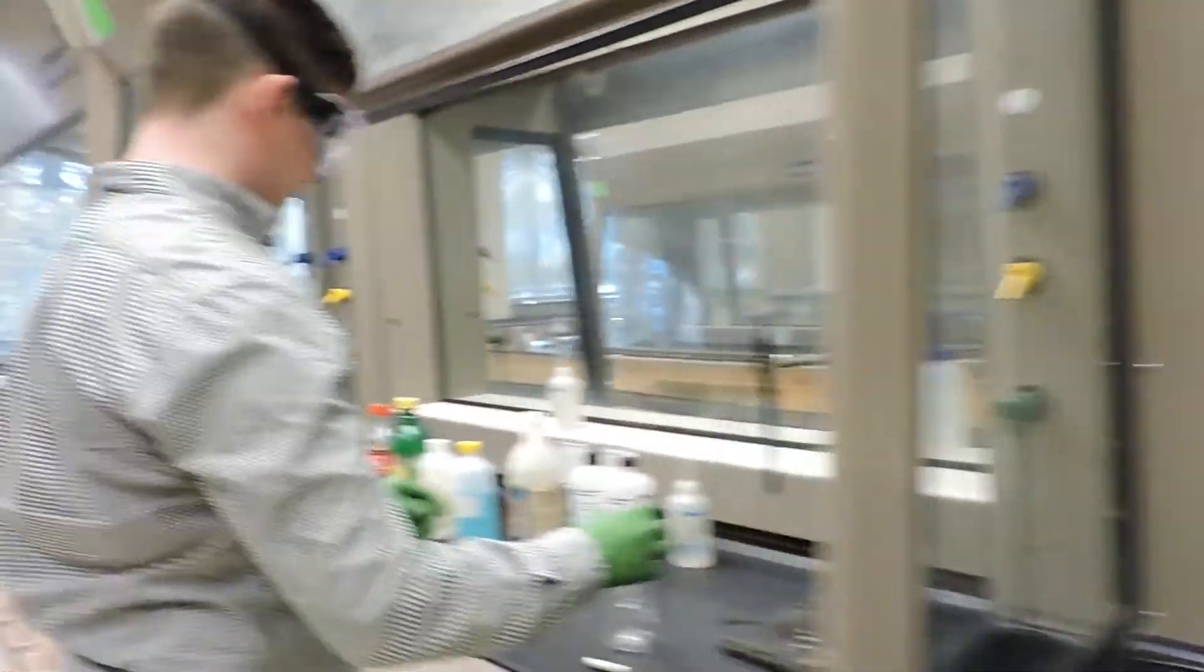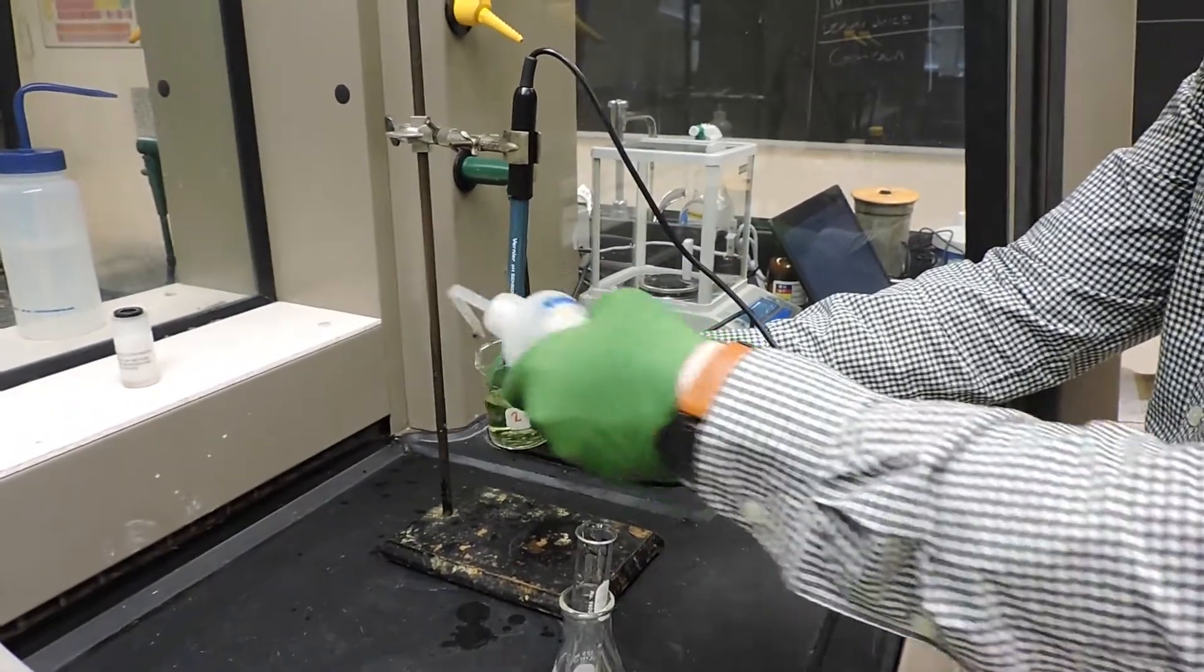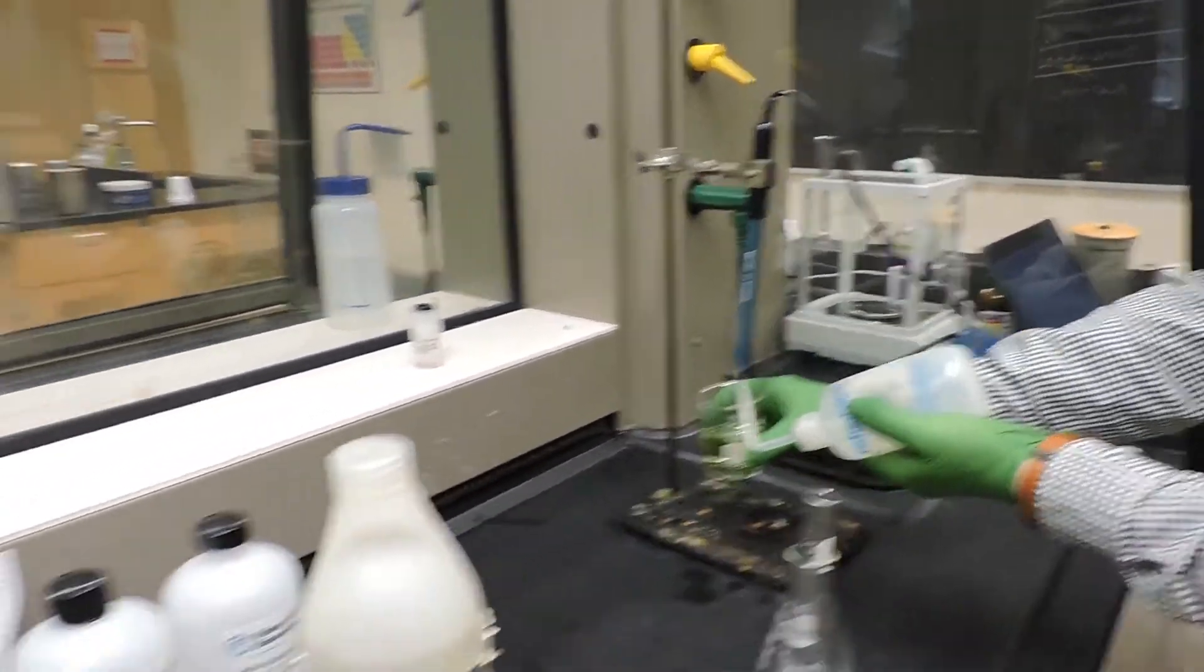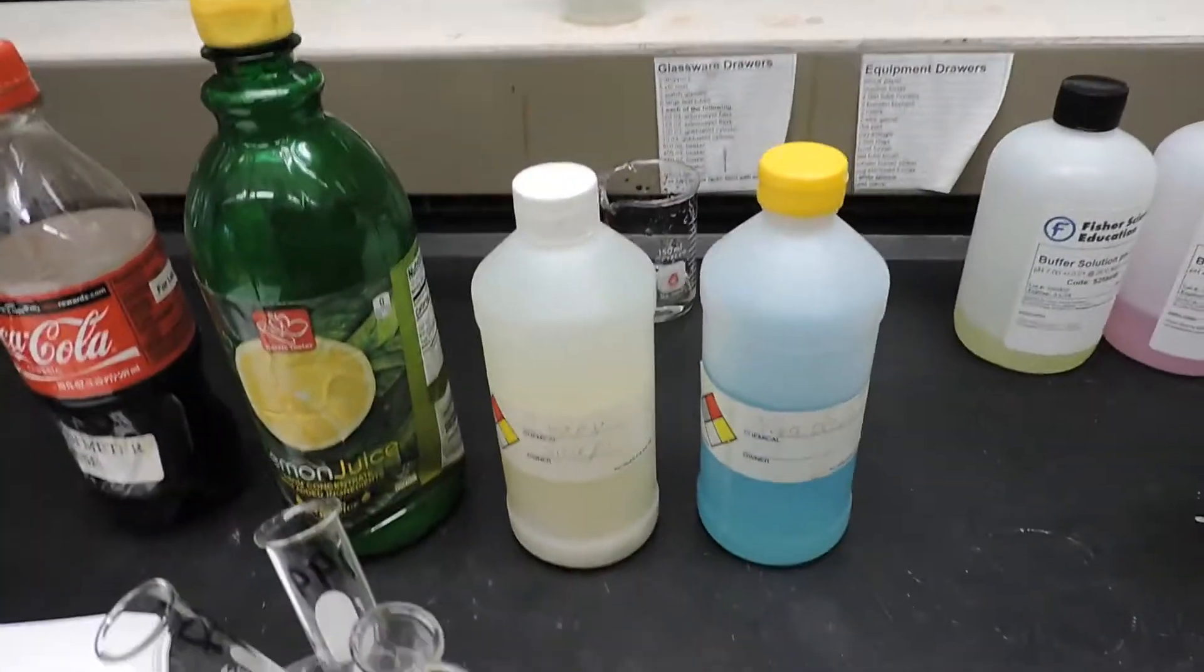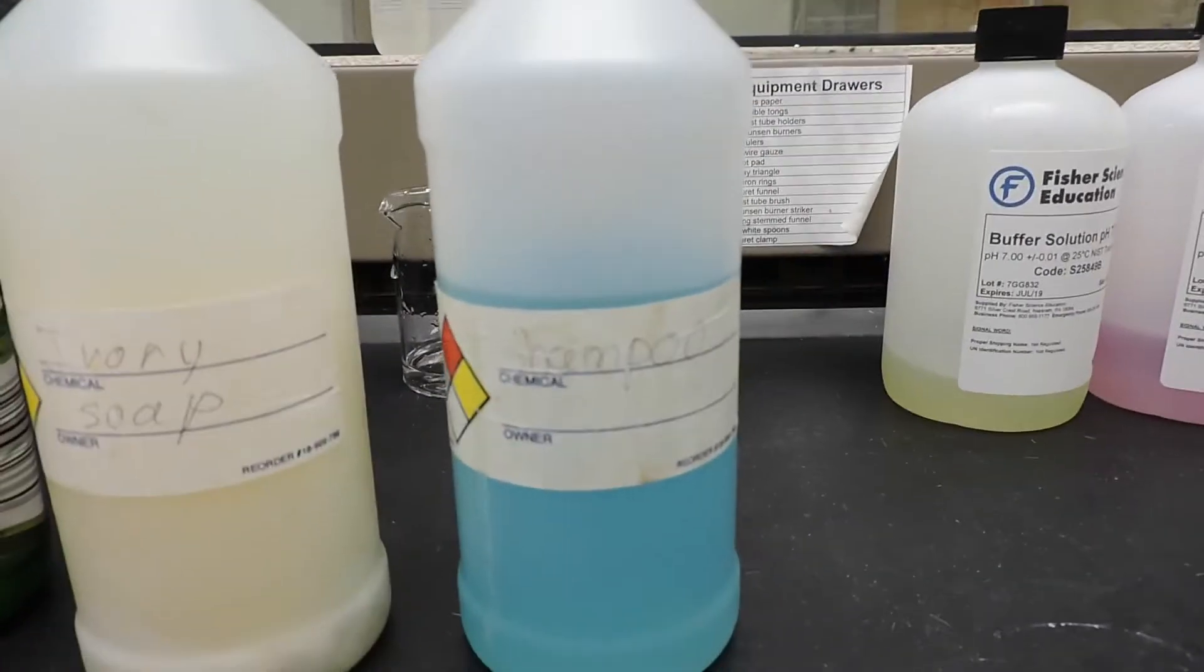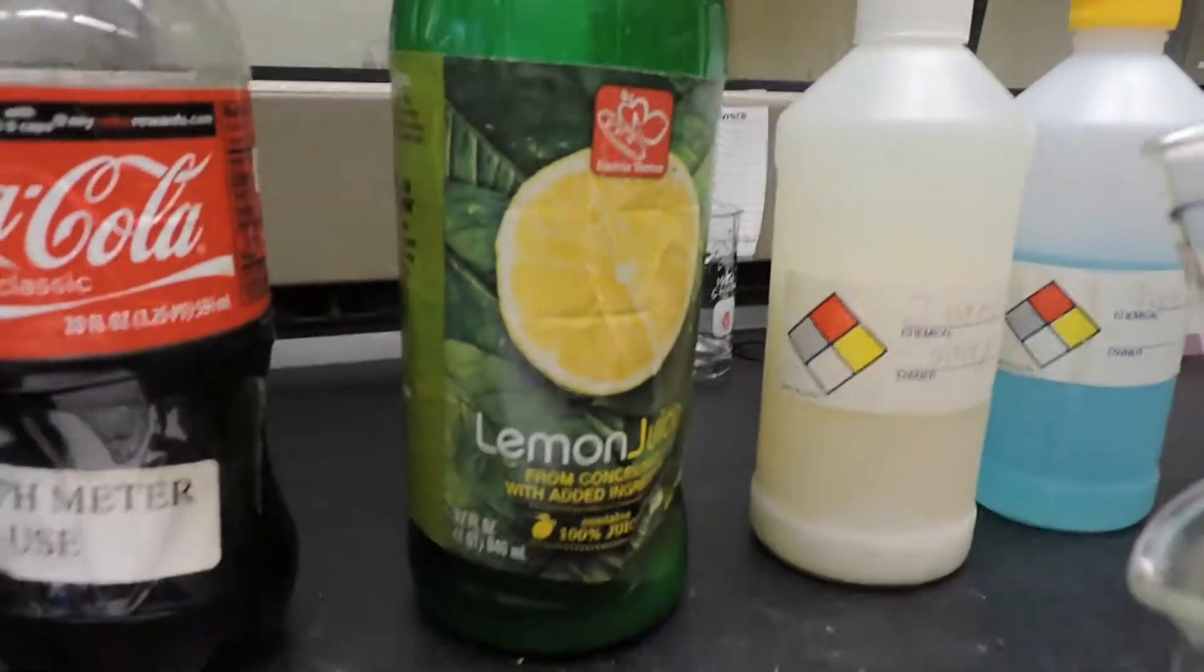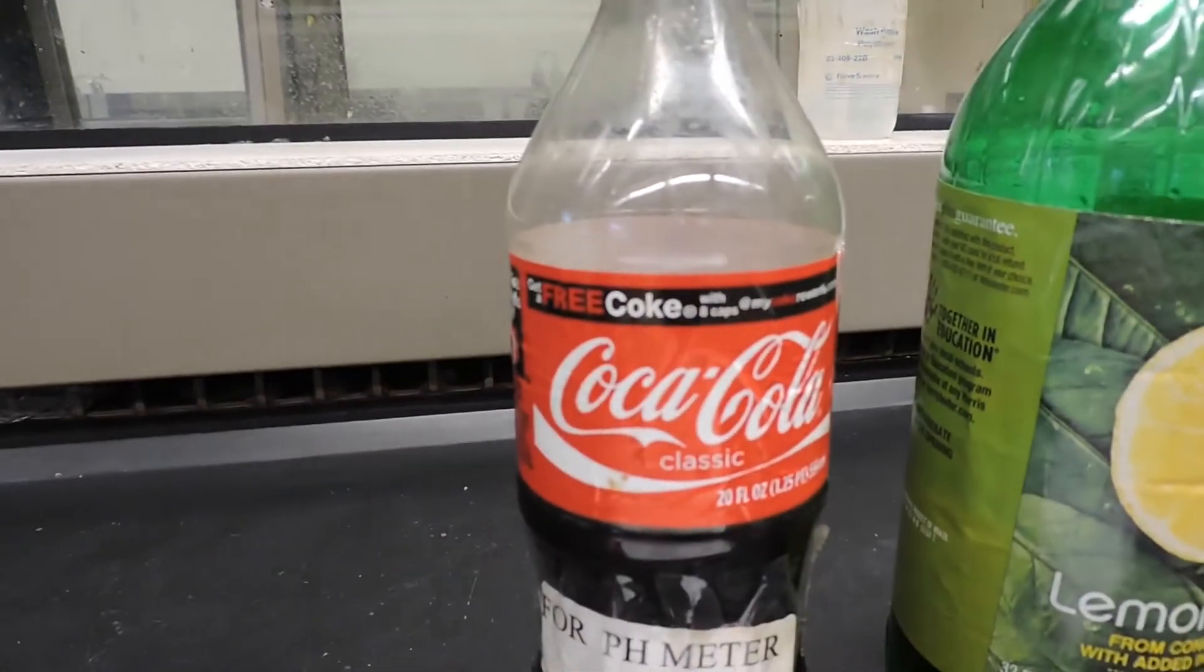So the next solution, well first we're going to rinse our probe because we don't want any leftover ammonia in there. And then we're going to measure the same way the pH of shampoo, ivory soap, lemon juice, and Coca-Cola.